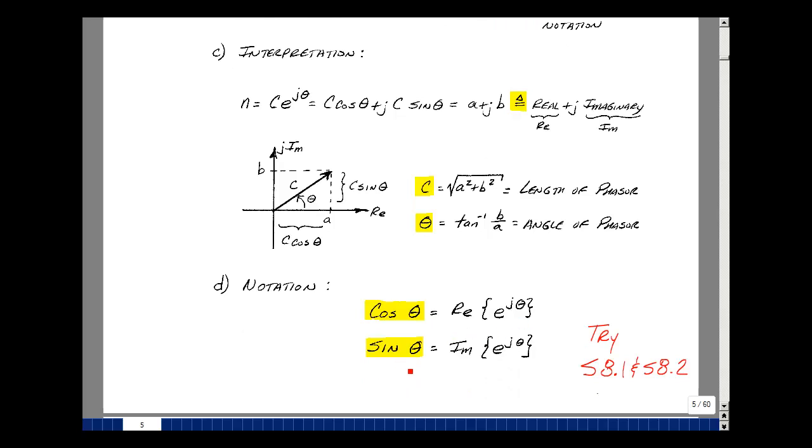Now given this notation, we could then say that the cosine of theta is the real part of e to the j theta, and that the sine of theta is the imaginary part of e to the j theta. Now in the ebook, there are bookmarks and one is labeled supplemental problems. With each chapter, there are problems that you can work on once we've covered the theory. We've covered enough pages so far to do supplemental problems 8.1 and 8.2.